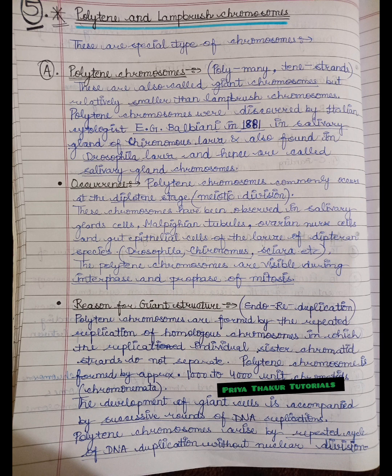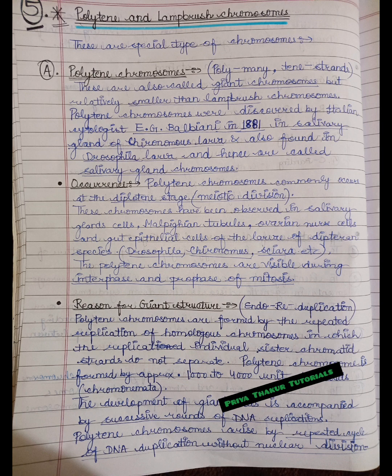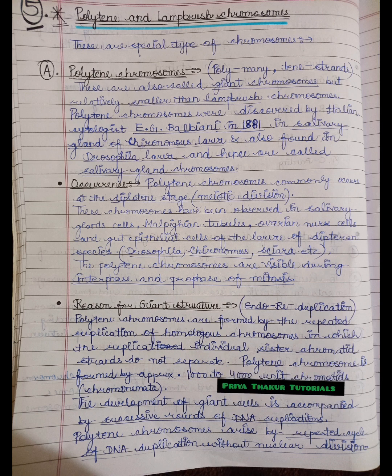The word polytene is made up of two words: poly, meaning many, and tene, meaning strands. These are also called giant chromosomes, but they are relatively smaller than the lampbrush chromosomes.